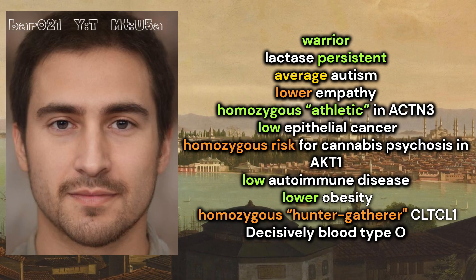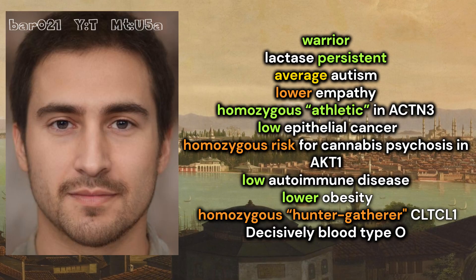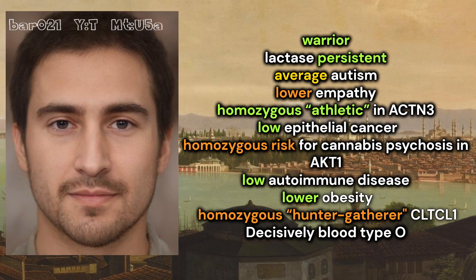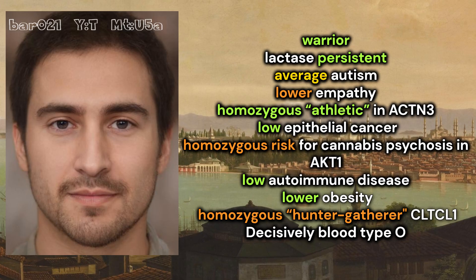He was predicted to be a warrior, definitively lactose persistent, to have average odds of autism, lower empathy, homozygous athletic genotype in ACTN3, low odds of epithelial cancer, homozygous risk genotype for cannabis psychosis in AKT1, low odds of autoimmune disease, lower odds of obesity, and homozygous hunter-gatherer genotype in CLTCL1, and decisively blood type O.